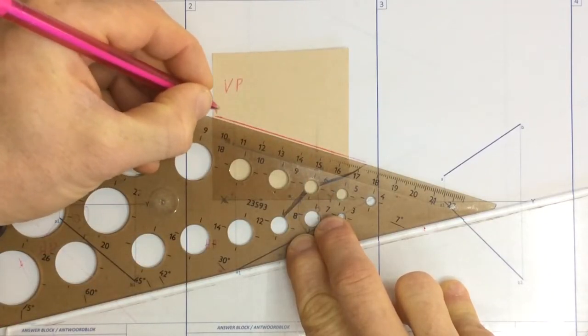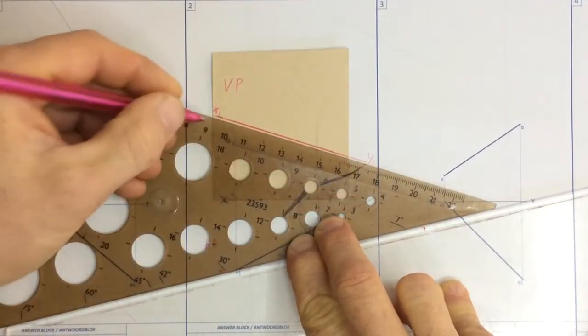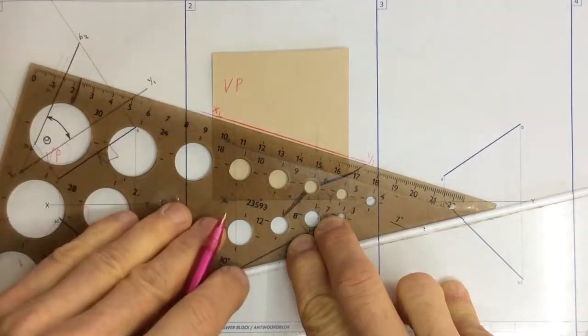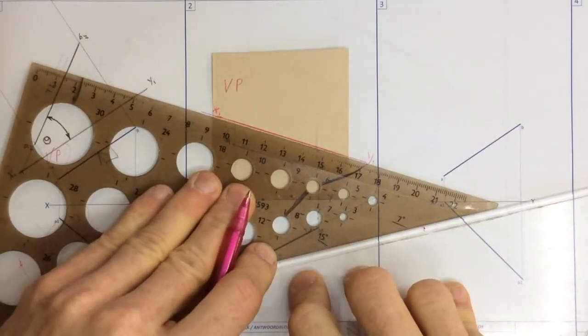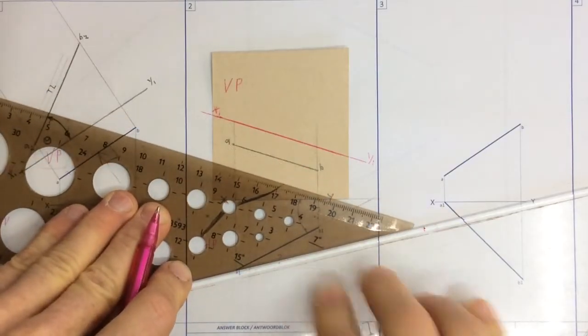And you mark that X1, Y1. Once I've got that in place, I then slide this back. Note that's parallel to that line. I haven't changed anything. I'm just going to slide it back.